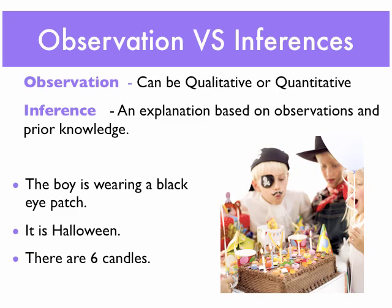Let's take a look at this picture here. We have a bunch of kids that are all together. It looks like they are dressed up in some sort of costumes, and it looks like some sort of celebration. This first statement — the boy is wearing a black eye patch — is going to be a qualitative observation, since black is describing the color of his eye patch. Second statement: it's Halloween. We're looking at this picture, we see kids dressed up, we see a celebration — that is going to be an inference.